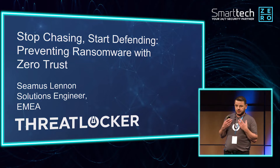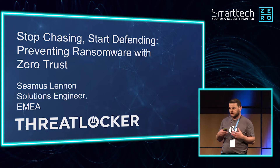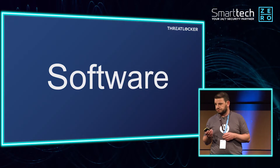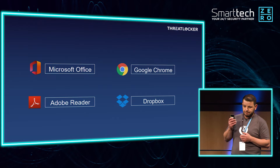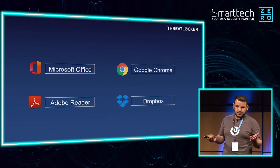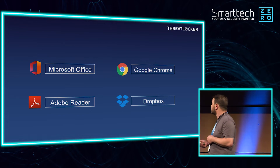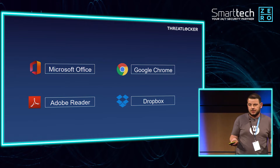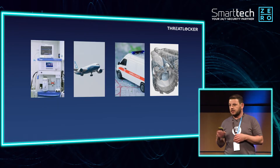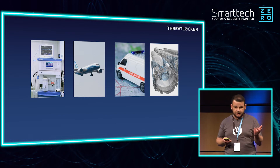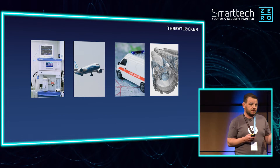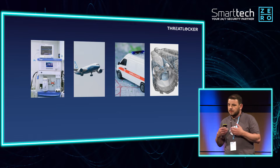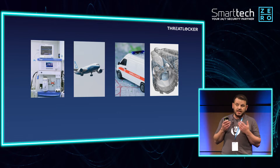Today I want to start discussing why we should be adopting a zero-trust architecture when it comes to our environments. We'll start off at the beginning and talk about software. Software is what we use every day — our office applications, browsers, Acrobat readers, file sharing applications. But software is also used in operating theaters, airplane tracking, ambulances, even rockets. The possibilities when it comes to software are actually endless.